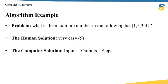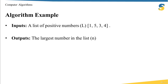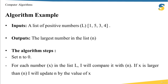So you have to start thinking in the way that the computer thinks — in other words, you have to set a solution algorithm in which you define inputs, outputs, and steps. In this problem, the input is a list of positive numbers, let's call this list L, containing the items 1, 5, 3, 4. The output is the largest number in this list, let's call it N. The algorithm steps are: first, set the initial value of N to zero; then for each number X inside the list, compare X with N; if X is larger than N, update the value of N to X.